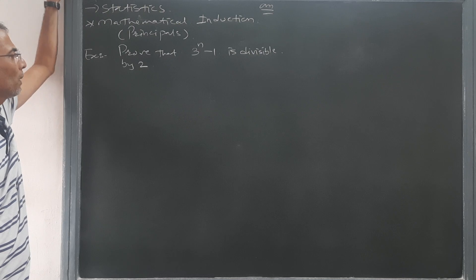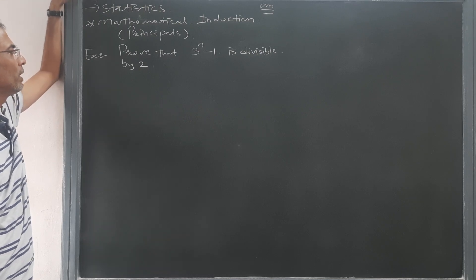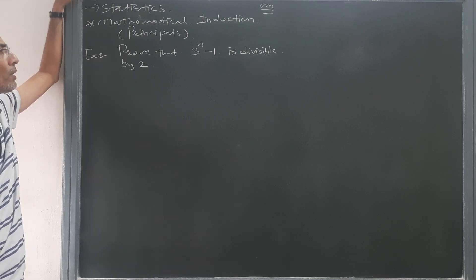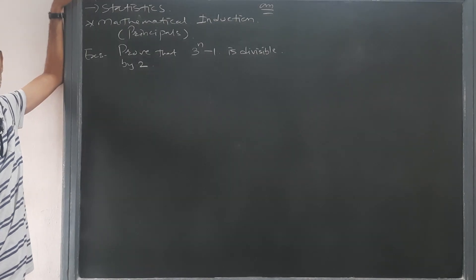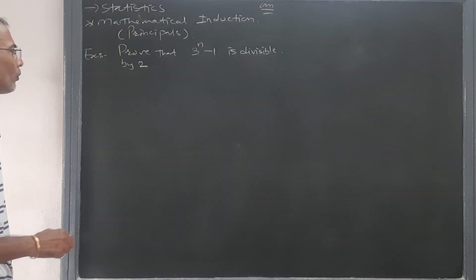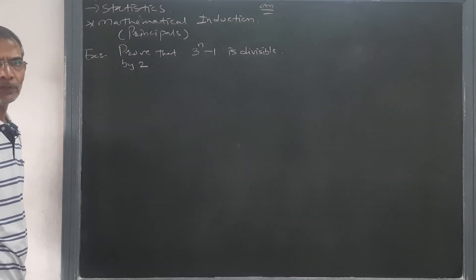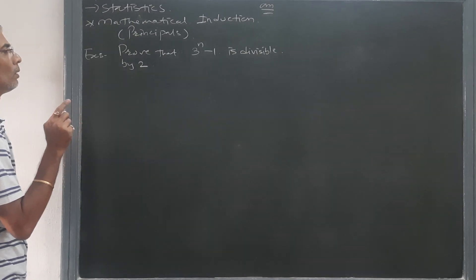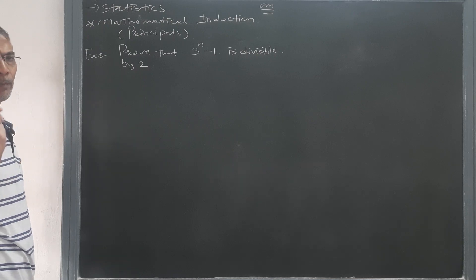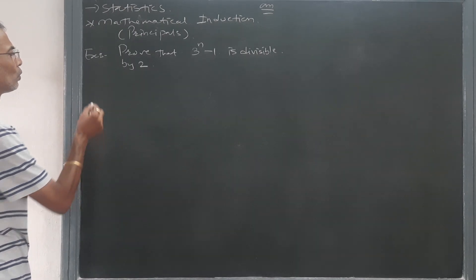Here, the given example shows that prove that 3 raised to n minus 1 is divisible by 2. According to the principle, step 1 says that first of all you have to replace n by 1 and prove that P(1) is true.